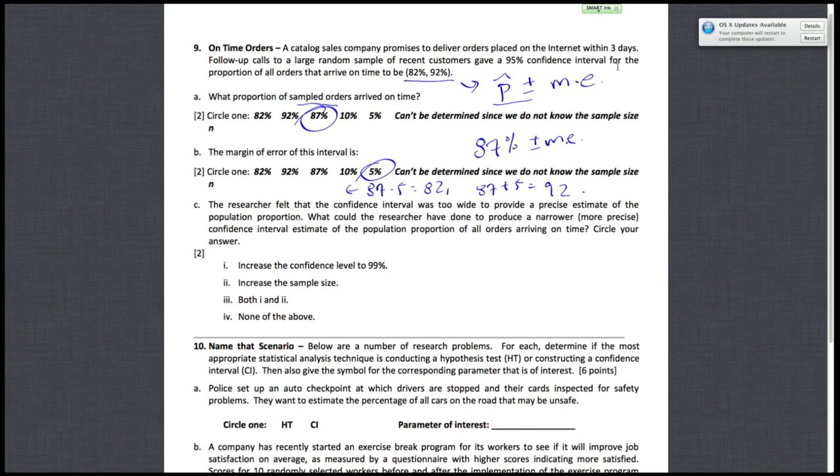And another way you can do this is just 92% minus 82% divided by 2, which is also 5%.